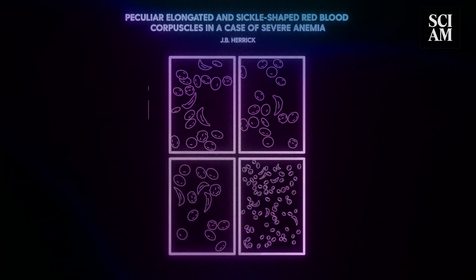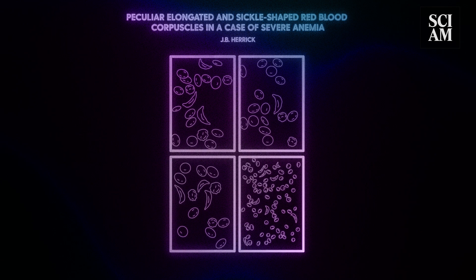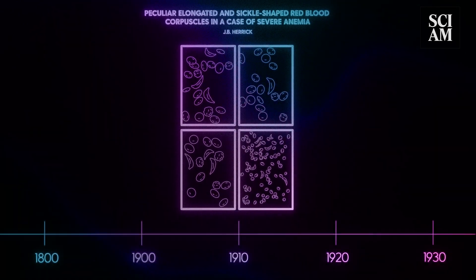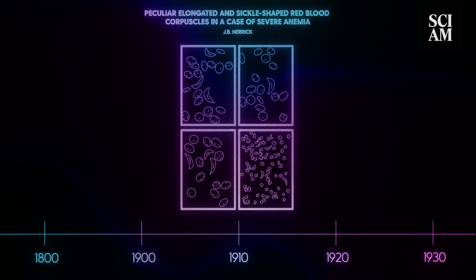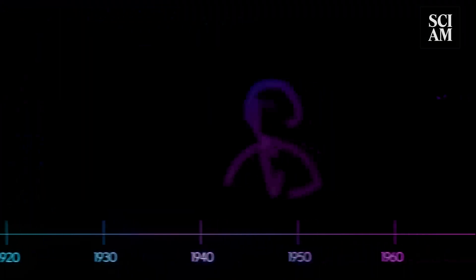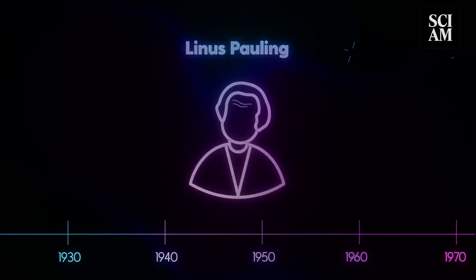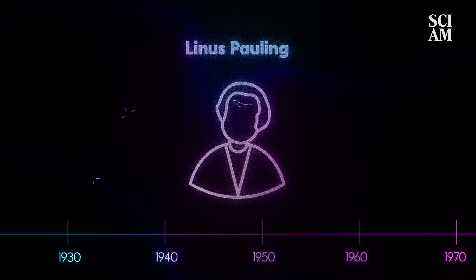It's been more than 100 years since sickle cell disease was first identified in a person. Over that century, science has made major strides in understanding the disease's basic biology and genetics. In 1949, Linus Pauling led research that would describe sickle cell as the first molecular disease.